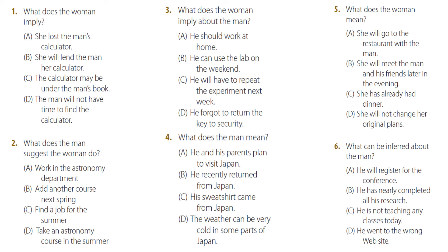Number three. 'Professor Clark, I'd like to repeat the experiment from last class. Is there a possibility I could use the lab over the weekend?' 'It'll be locked, but you can get the key from the security office. Make sure you return it when you're finished.' What does the woman imply about the man?